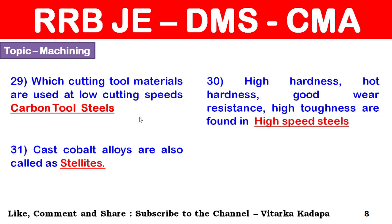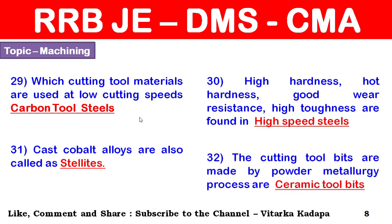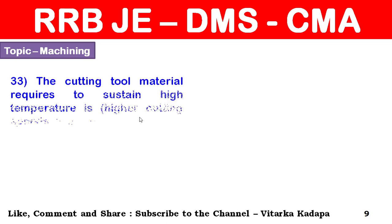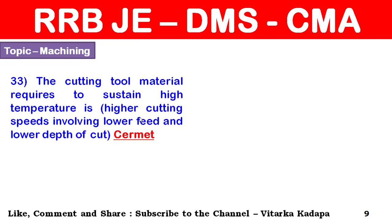Cast cobalt alloys are also called stellites. Cutting tool bits made by the powder metallurgy process are ceramic tool bits. Ceramic cutting tool materials are required to sustain high temperatures — that is, higher cutting speeds with lower feed and lower depth of cut.